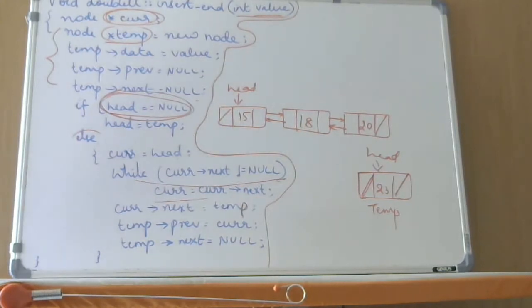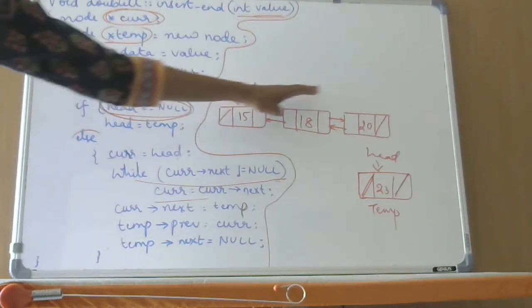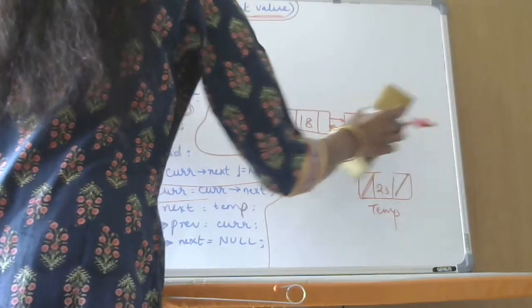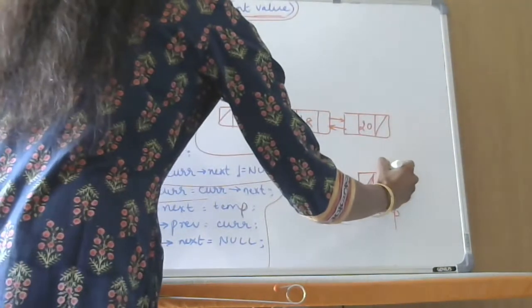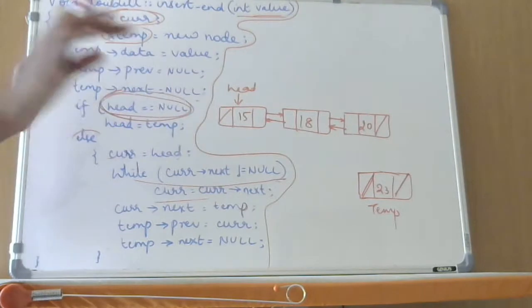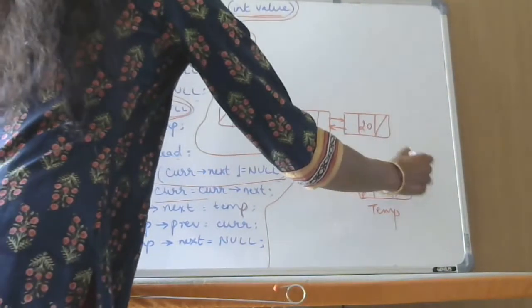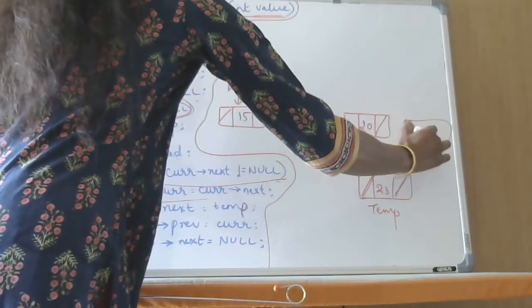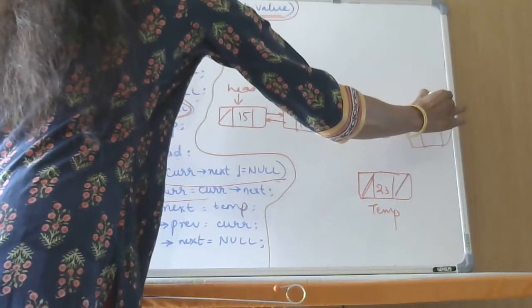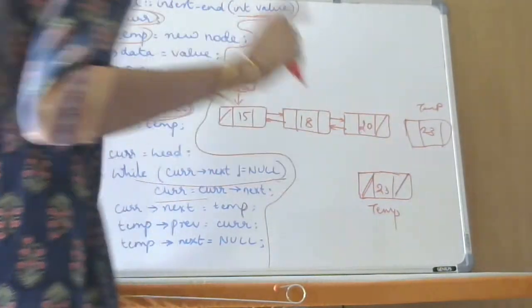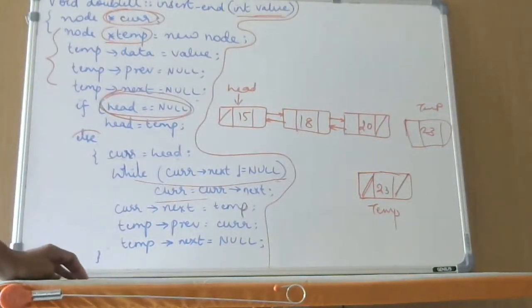Else means the list is not empty. So if the list is not empty, that means I have some elements in the list. Let me take this example — I have some elements in the list. This is the list that is already existing. I have three nodes: 15, 18 and 20. I want to insert this temp — 23 — it should come as the last node. This is my temp node. I have to insert it here. Now, if you look here, this is a double linked list, so two links you have to always change.